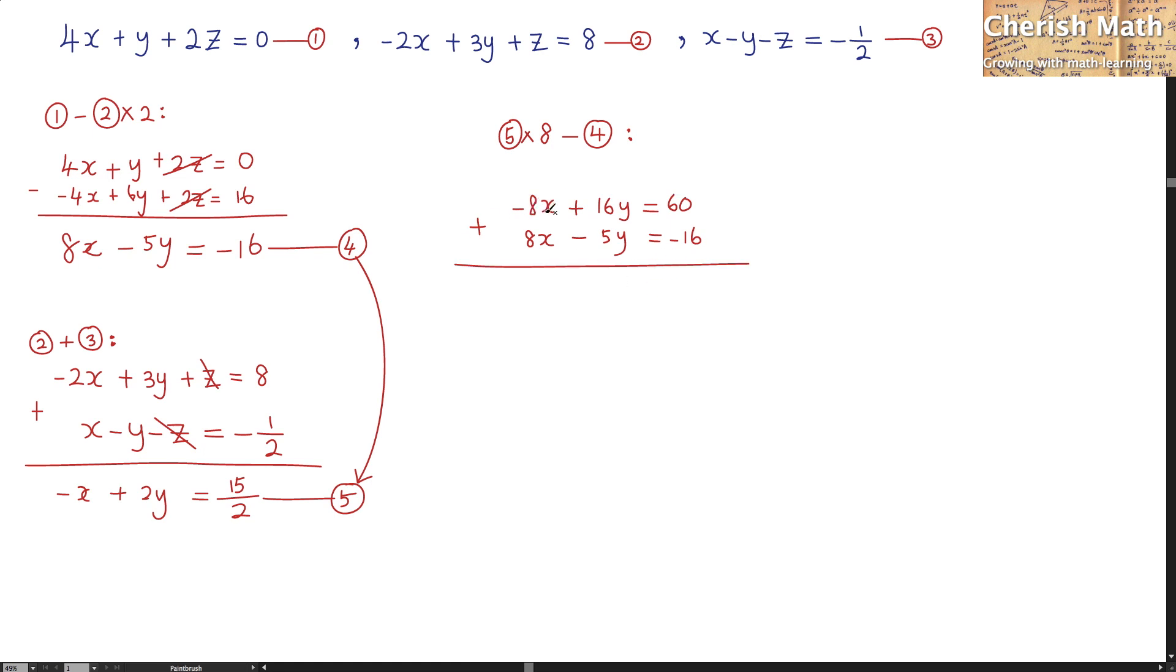Now, negative 8x plus 8x, this part is gone. Here, 16y minus 5y left 11y. 60 minus 16 left 44. And the value of y is by using 44 divided by 11, the result is 4. And we found the first value here with y.